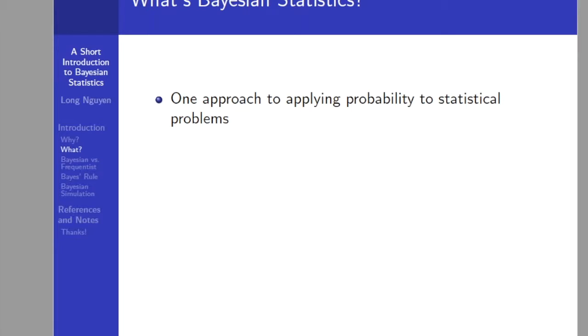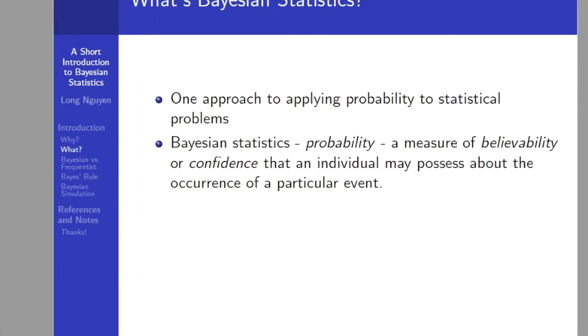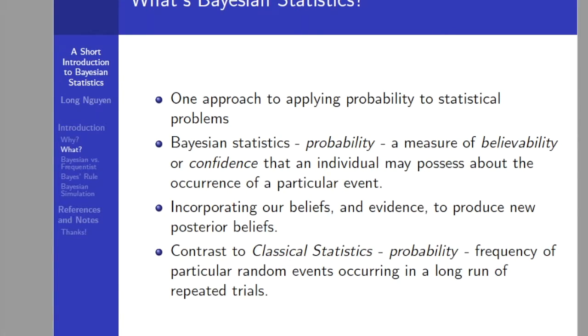What is Bayesian statistics? As stated above, Bayesian statistics is one of many approaches to probability. Bayesian statistics considers probability as a measure of believability or confidence that an individual may possess about the occurrence of a particular event. We may have a prior belief about an event, but our beliefs are likely to change when new evidence is brought up. Bayesian statistics gives us a solid mathematical means of incorporating our beliefs and evidence to produce new posterior beliefs.